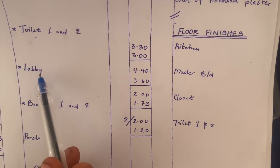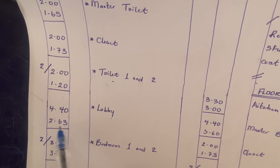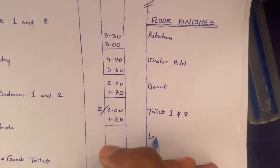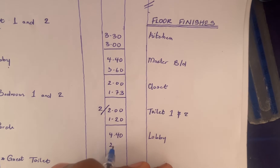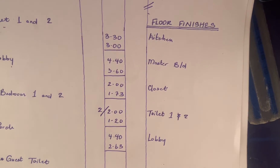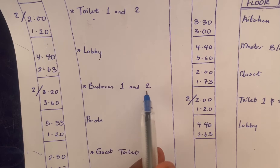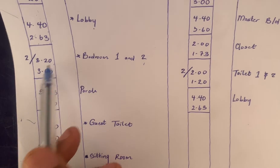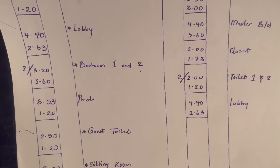Next would be the lobby. The lobby we calculated as 4.40 by 2.63. Then bedroom one and two — we calculated bedroom one and two as 3.20 by 3.60, and we times it by two because they have the same parameters.